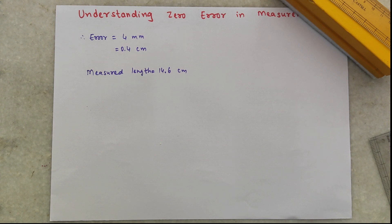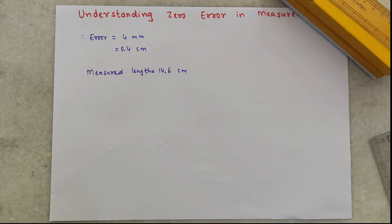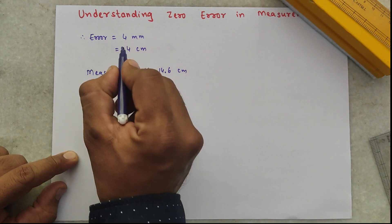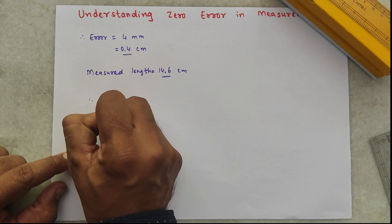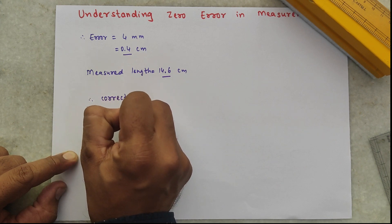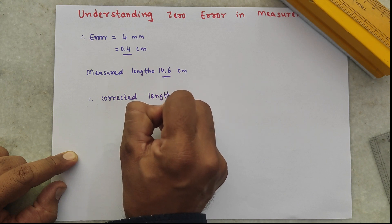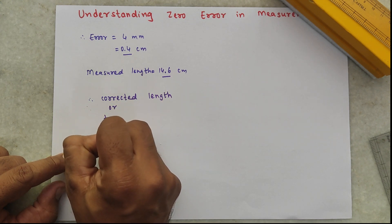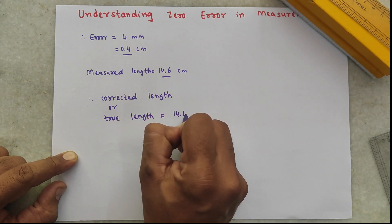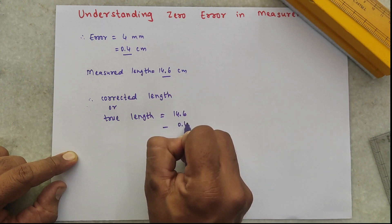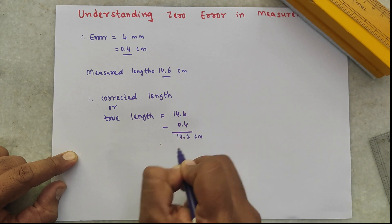As this instrument has an error of 4 millimeters, a correction must be done to find the true measurement. To find out the true measurement, what we need to do is subtract the error from the measured value. So we can say that the corrected length, or the true length, is 14.6 minus 0.4, that is 14.2 centimeters.